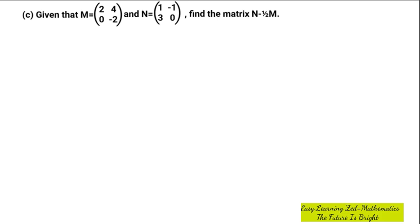What we're going to do is write the expression we need to find — that is N minus one-half M — which equals matrix N, which is [1, -1, 3, 0], minus one-half multiplied by matrix M. Note that one-half is a scalar, so we're multiplying a scalar by a matrix.